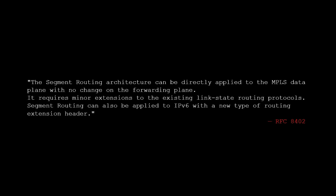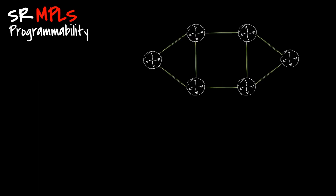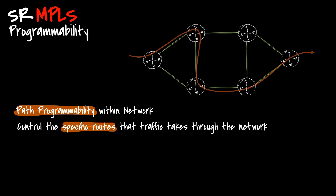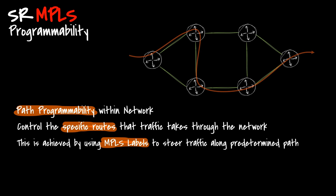So why segment routing over IPv6, or why SRv6? Segment routing over MPLS is a network technology known for its stability, offering effective path programmability within the network. Path programmability refers to the capability to define and control the specific routes that traffic takes through the network. SRMPLS achieves this by using MPLS labels to steer traffic along a predetermined path, offering flexibility and control in network routing.